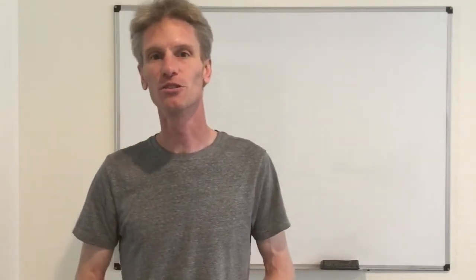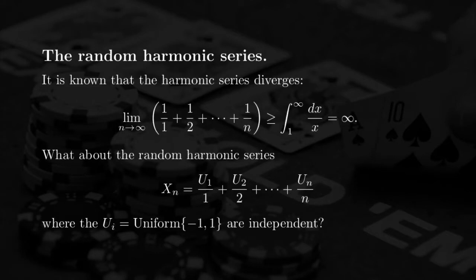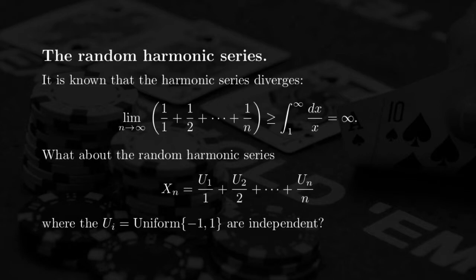One popular example is to look at an object called the random harmonic series. To motivate this, I remind you that the harmonic series is the sum 1 + 1/2 + 1/3 and so on. It's known that the limit when n goes to infinity of this sequence is equal to plus infinity. You can easily prove it by comparing the sum with an integral — it's larger than the integral from 1 to infinity of dx/x, which equals log of infinity, giving divergence.